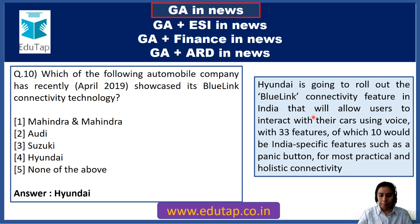Question 28: Recently, an Indian Army patrol team discovered the wreckage of a World War 2 vintage US Air Force aircraft. You have to identify the district — it is in the Rowng district of Arunachal Pradesh. The state is mentioned here, but in the examination the state may not always be given.